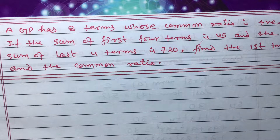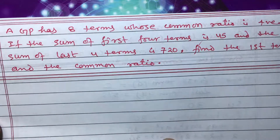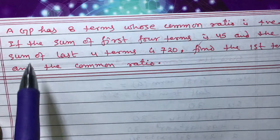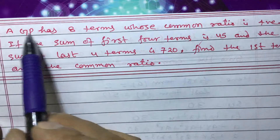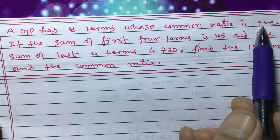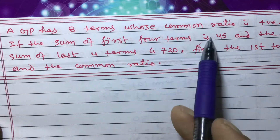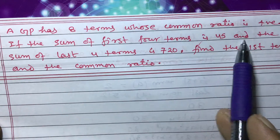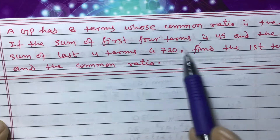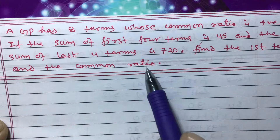Dear students, today I am going to teach you one question related to geometric progression of class 10. The question is: a GP has eight terms whose common ratio is positive. If the sum of the first four terms is 45 and the sum of the last four terms is 720, find the first term and the common ratio.